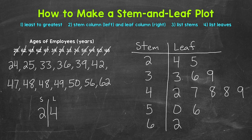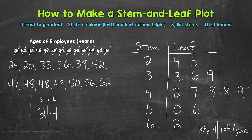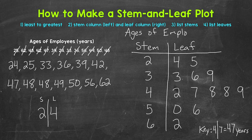That's it for our leaves. Now we can make a key so that anyone looking at this will know exactly what the stems and leaves represent. We'll take an example from the table — let's use 47 — so a stem of four and a leaf of seven equals 47 years. And then lastly, let's put a title up top: Ages of Employees, in years.